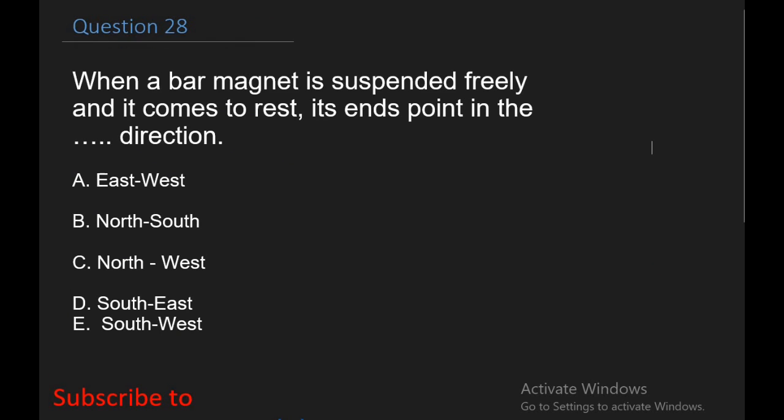Question 28: When a bar magnet is suspended freely and it comes to rest, its end points in the north-south direction. The south pole of this bar magnet is near the geographical south pole. Therefore, when a magnet is suspended freely, the magnetic poles of the earth attract the opposite poles of the magnet and the magnet comes to rest in the north-south direction. So the answer is B.